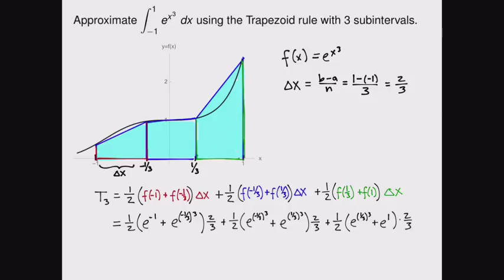And now at this point, we can evaluate this by any means. I used a calculator. And using the calculator, this comes out to approximately 2.3629. So that's our estimate for the value of the integral. And I can even write that here. That's approximately the value of the integral from negative one to one of e to the x cubed dx.